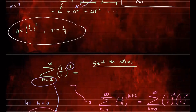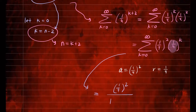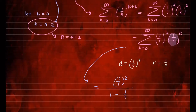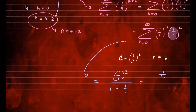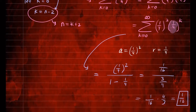Since r equals 1 fourth is between negative 1 and 1, this series converges. It converges to a over 1 minus r, which is 1 over 16 divided by 3 over 4. This simplifies to 1 over 16 times 4 over 3, giving 1 over 12. So this geometric series converges to 1 over 12.